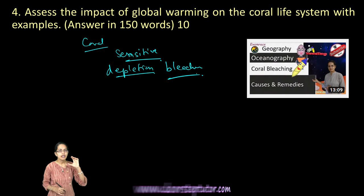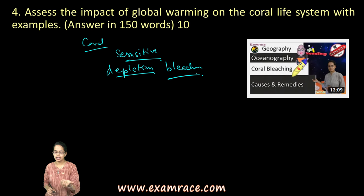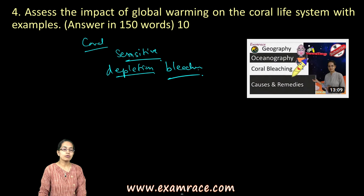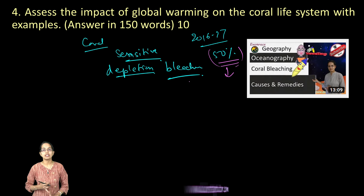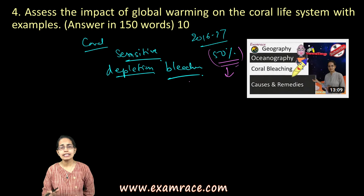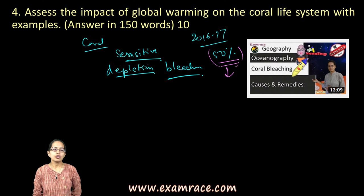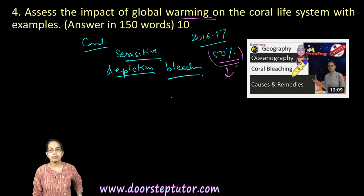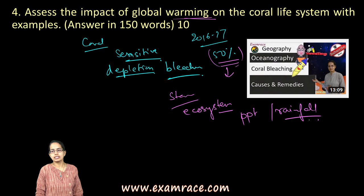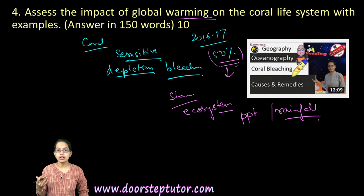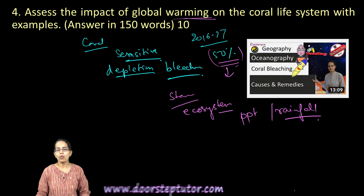Infectious disease outbreaks are also harmful to corals. Between 2016 and 2017, there was nearly a 50% reduction in corals, which highlighted the urgency to assess what was going wrong. Global warming leads to changes in storm patterns, ecosystem disruption, changes in precipitation, ocean currents, ocean acidification, and shifting pH levels — all of which directly and indirectly affect coral life.